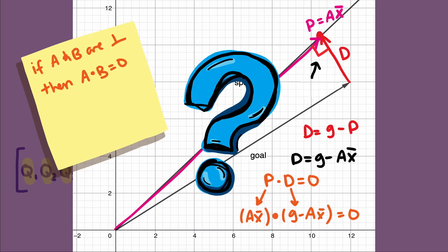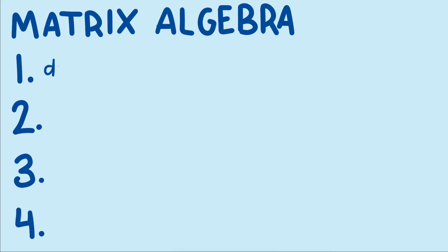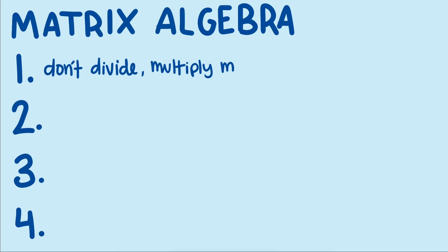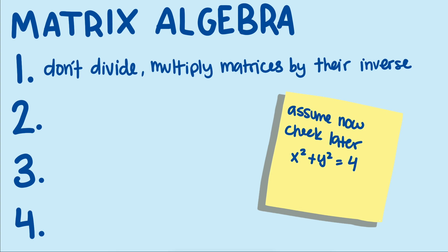But how do we solve a matrix equation? We use matrix algebra. The process for solving matrix equations is basically the same as solving algebraic equations from secondary school. However, there are a few important differences because matrices have different properties than real numbers. Here are the four big ones. First, we don't divide by matrices — instead of dividing we multiply by the inverse matrix. It's also important to remember that not all matrices have inverses; only square matrices with linearly independent columns have inverses. In practice we might solve an equation assuming a square matrix has an inverse, then in a particular application check to make sure that is the case.